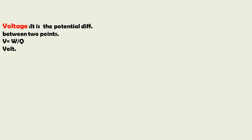Now let us talk about voltage. Voltage is the potential difference between two points — the potential difference across two terminals is called voltage. We define voltage as the ratio of work done per unit charge, because we have to do a certain amount of work to bring a charge from infinity to a given point. The unit of voltage is the volt.